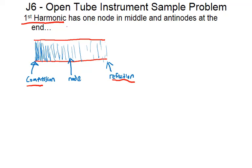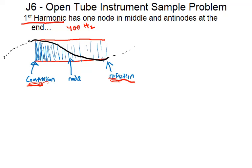Depending on the frequency — say it's a 400 Hz instrument — the compression and rarefaction are going to be switching 400 times per second. The node stays the same in the middle because it's a standing wave. If we draw the equivalent wavelength on top, we have compression up top, then rarefaction, completing down to the node and back up.